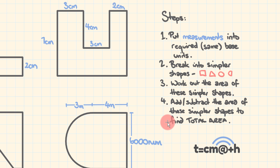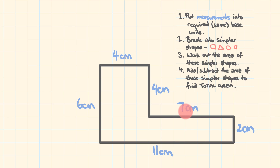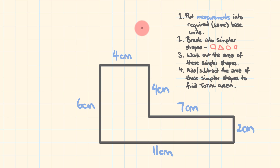Let's get right into our first example. We have this L-shape here, and we're going to work out the area within it. Step one: put the measurements into the required or the same base units. Centimeters is fine — we haven't got any specific units we have to put them in, and they're all already in centimeters. So this step is already done. We only have to change them if there are different units or if we want them in different units, and we'll see an example of that a bit later on.